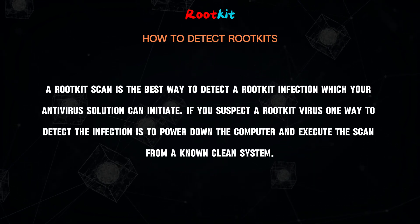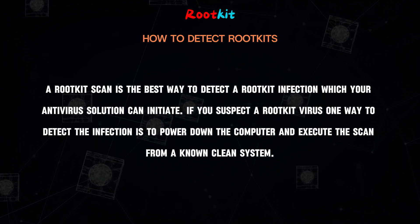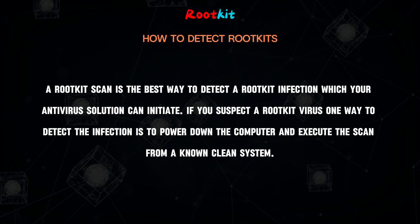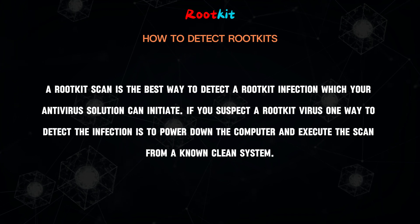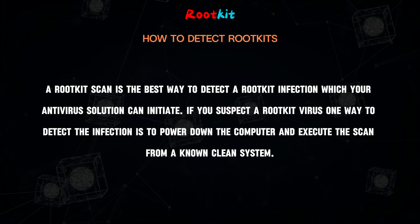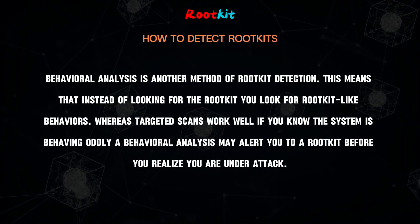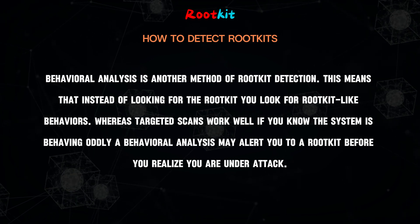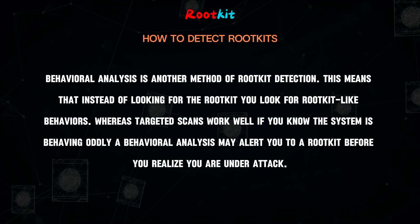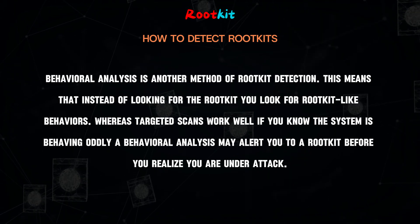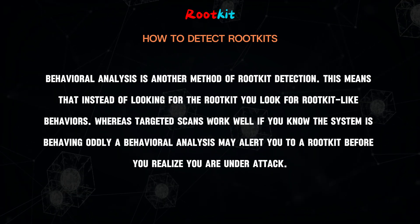A rootkit scan is the best way to detect a rootkit infection, which your antivirus solution can initiate. If you suspect a rootkit virus, one way to detect the infection is to power down the computer and execute the scan from a known clean system. Behavioral analysis is another method of rootkit detection — instead of looking for the rootkit, you look for rootkit-like behaviors. Whereas targeted scans work well if you know the system is behaving oddly, a behavioral analysis may alert you to a rootkit before you realize you are under attack.